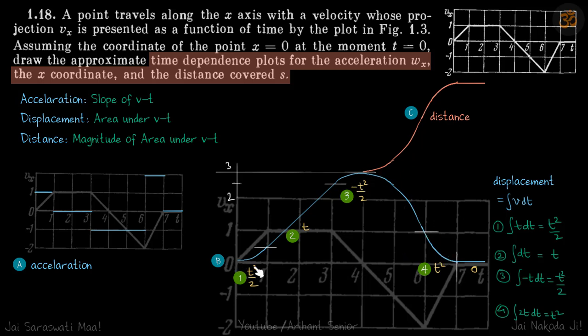Here it was t squared by 2, the same parabola but inverted, so that will happen up to this point. After that, the velocity is 2t, so the integral is t squared. The curve will also be t squared, so it's going to be sharper. Here it was minus t squared by 2, so it was a bit blunt, but here it's going to be sharp.